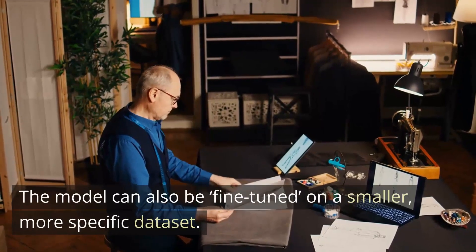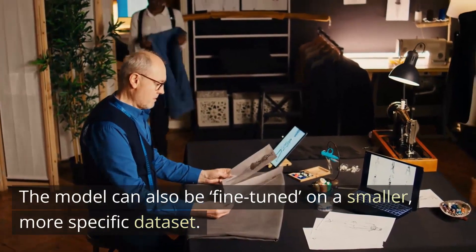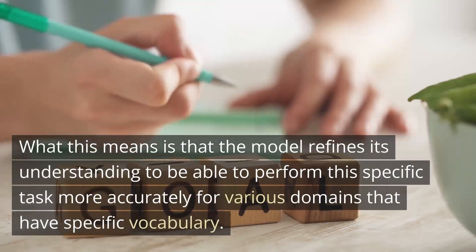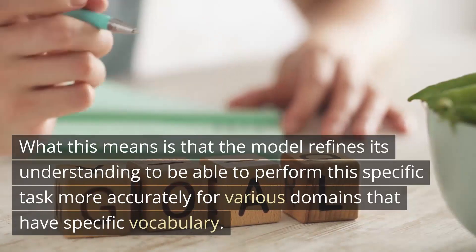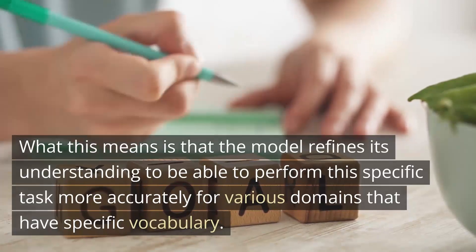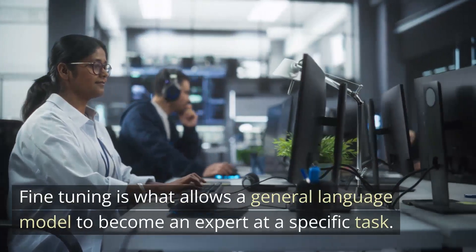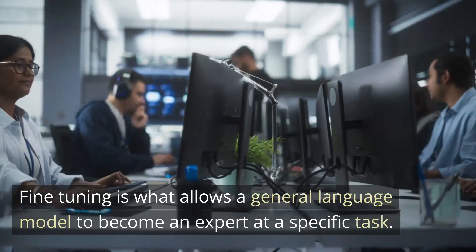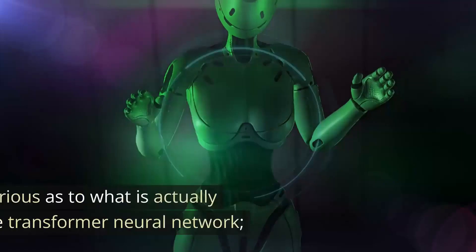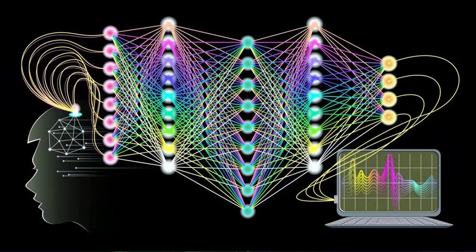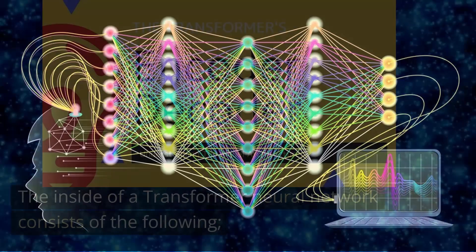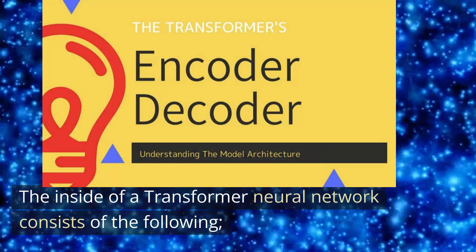And the model keeps doing this, gradually improving its word predictions until it can reliably generate coherent, correct sentences in natural human language we use. It will eventually forget about cat, and it can figure out the grass is green. The model can also be fine-tuned on a smaller, more specific data set. What this means is that the model refines its understanding to be able to perform this specific task more accurately for various domains that have specific vocabulary. Fine-tuning is what allows a general language model to become an expert at a specific task.